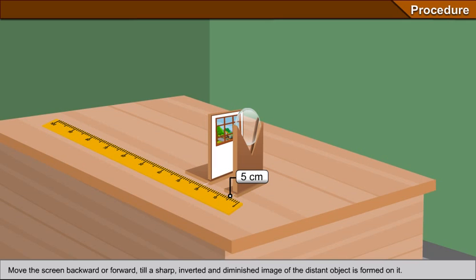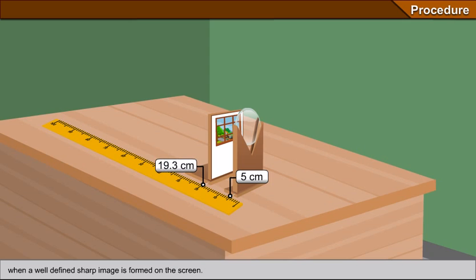Read and record the position of the lens and the screen by looking vertically down at the midpoint of their bases when a well-defined sharp image is formed on the screen.